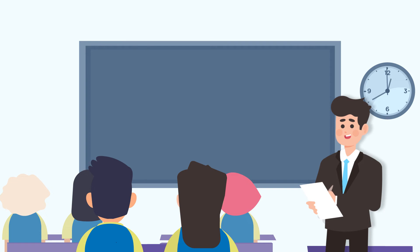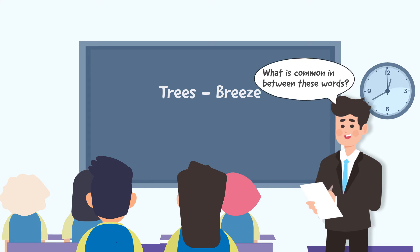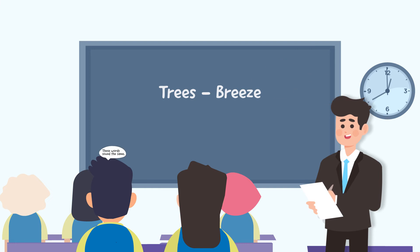Write similar sounding words such as trees and breeze on the board. Now ask the students if they can tell what these words have in common. The possible response would be that these words sound the same. Next, write the words teach and beach on the board and say them aloud to help the students get a better understanding of its pronunciation.